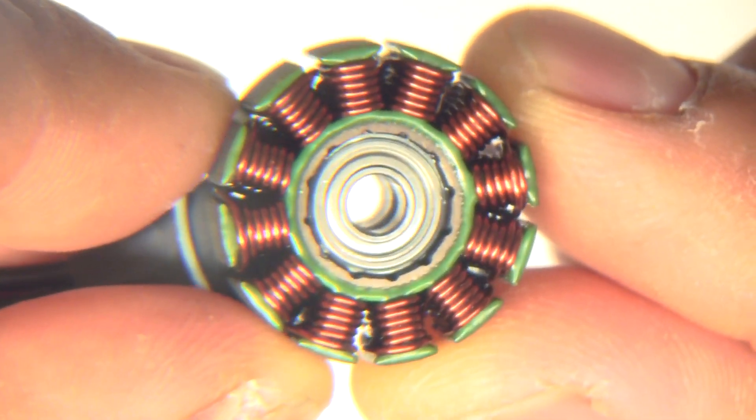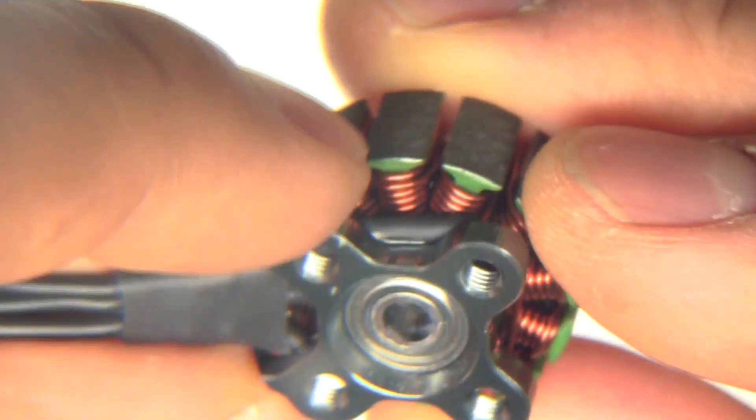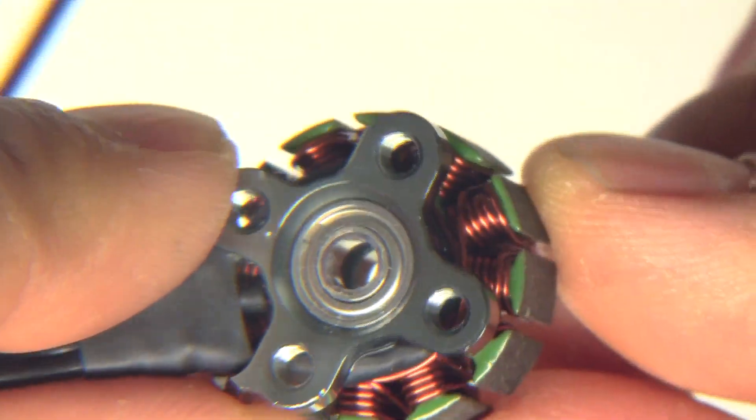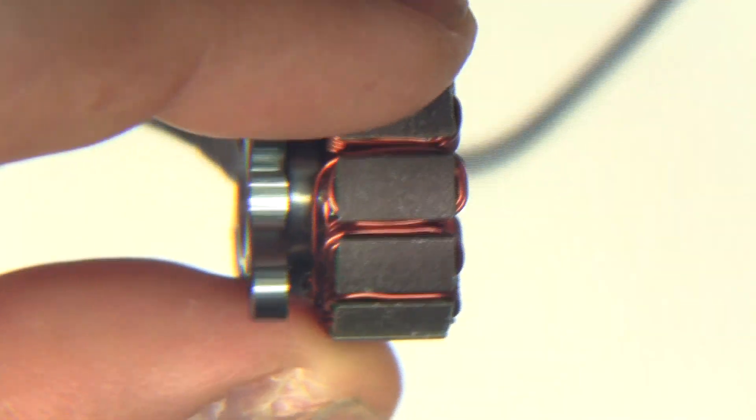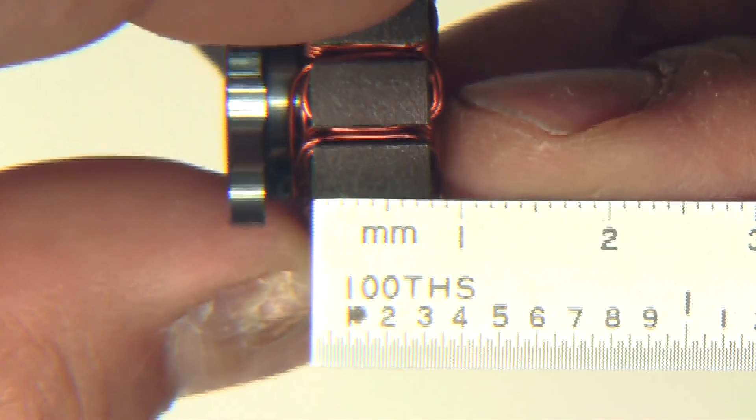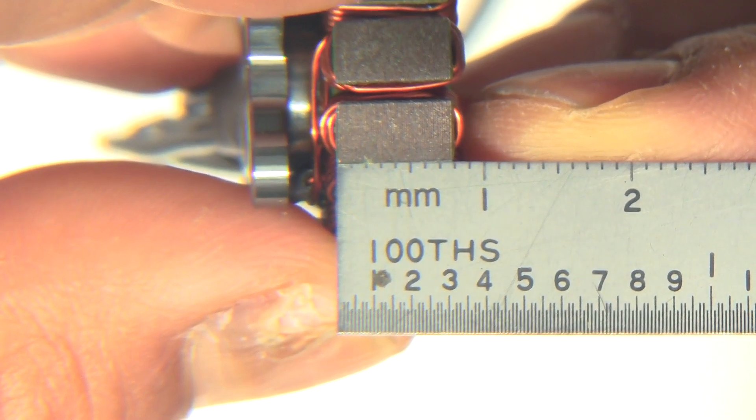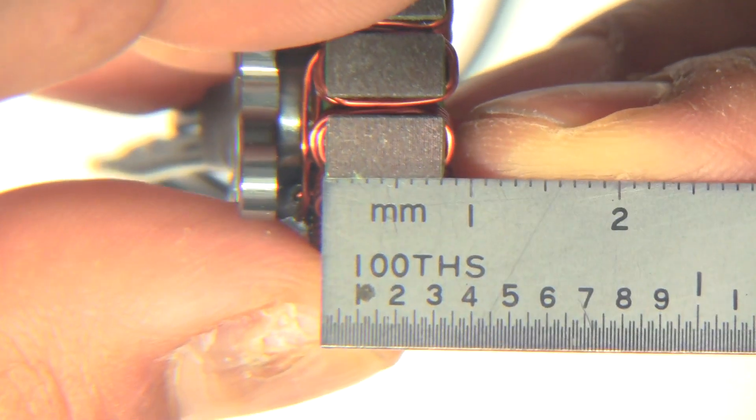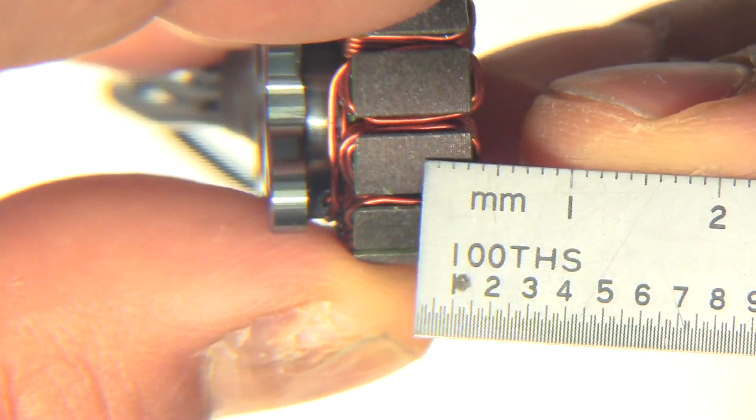As you can see there, almost perfect windings. None of the wires cross. So that's pretty nice to look at. And there's the stator. So let's just get a quick measurement here, just to see. So yeah, 7.5.